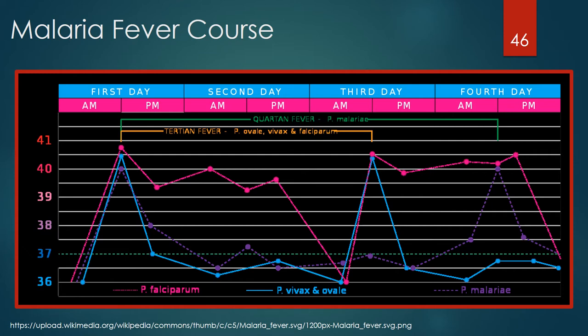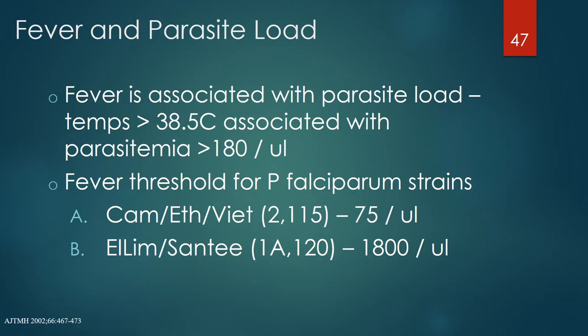Plasmodium falciparum, vivax, and ovale spike in a tertiary pattern — day 1 and then days 3, 5, 7, etc. Plasmodium malariae fevers spike in a quartan pattern — day 1 then days 4, 7, 10, etc. Initially malaria fevers are irregular and then transition to a tertiary or quartan pattern. Plasmodium falciparum fever is generally associated with the parasite load, with temps greater than 38.5°C associated with parasitemia greater than 180 per microliter. However, the fever threshold varies with the infecting strain — for example, strain A had a fever threshold of 75 organisms per microliter versus strain B with 1,800 organisms per microliter.